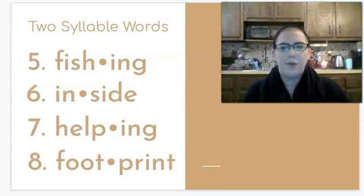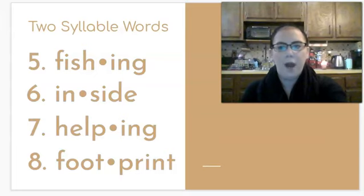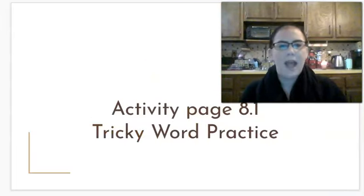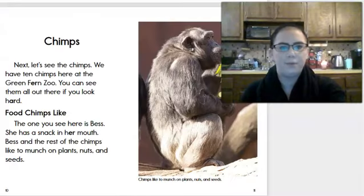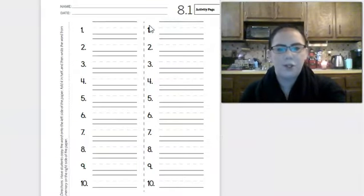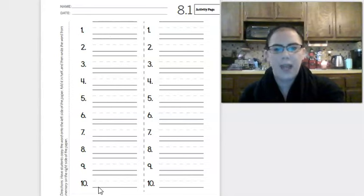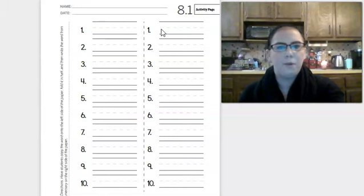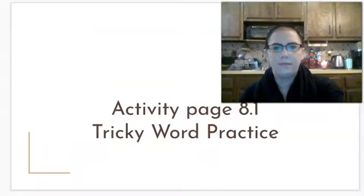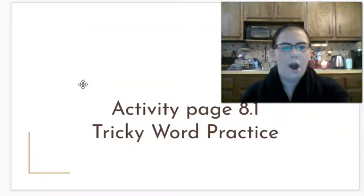The next thing we're going to do is take out page 8.1 from your workbook. I'm going to read you some tricky words that you're going to practice writing on your own. This is what the page looks like — it's numbered 1 through 10. I'm going to read 10 words and I want you to write them on the left side. Then on the right side you can check your work and rewrite it the correct way if you got it wrong. Are you ready?